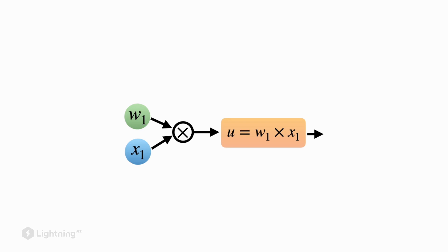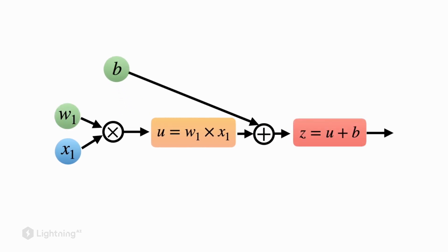Now, when we compute the weighted sum, we multiply w1 with x1. And then, of course, we also have the bias unit that we add to that. So z here is our weighted sum then.